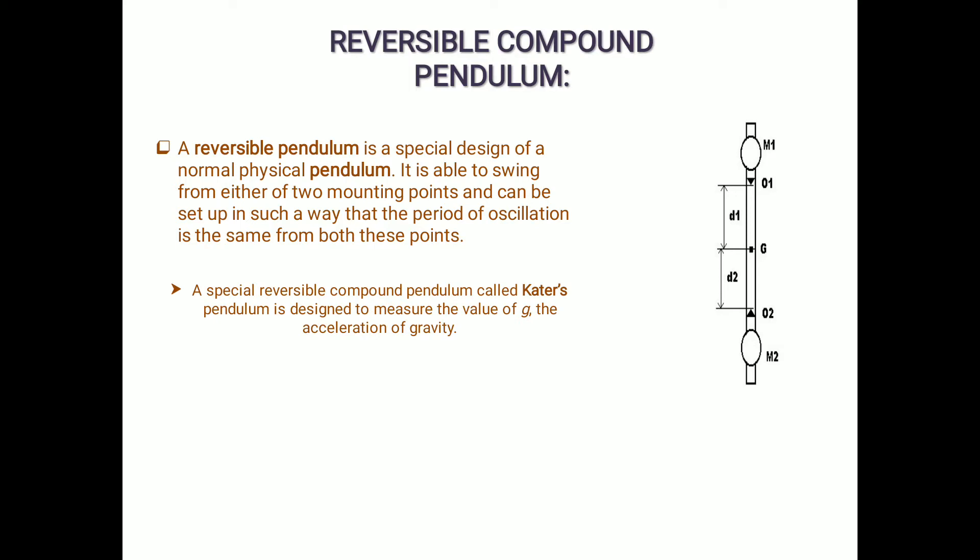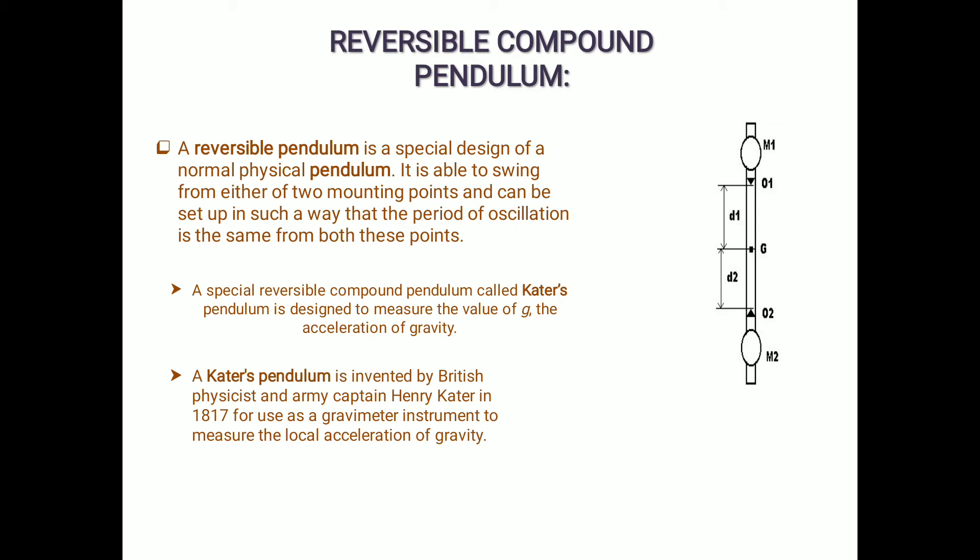What is an example of a reversible compound pendulum? There is a special reversible compound pendulum called Kater's pendulum. It was invented by British physicist and army captain Henry Kater in 1817. The use of Kater's pendulum is that it acts as a gravimeter instrument to measure the local acceleration of gravity, that is the value of g.